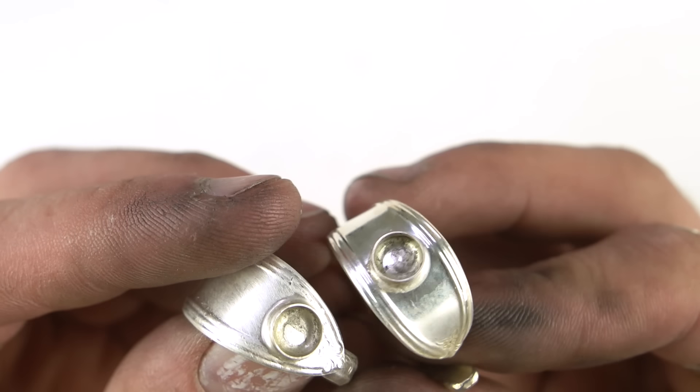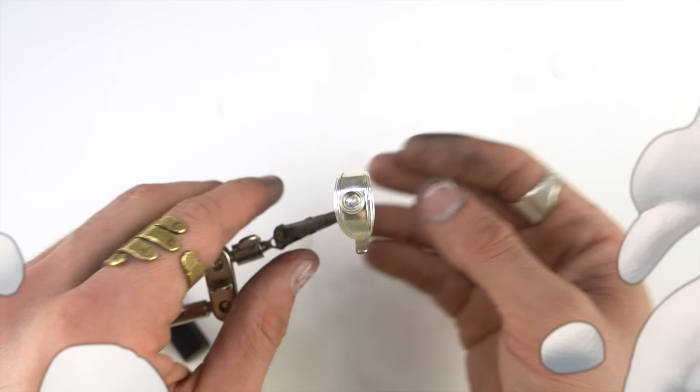So then I soldered the bezel on those other two rings and it looked a lot better. And I'm going to use that macro lens to show you how I place the gem.